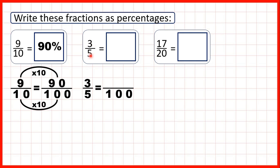Now we have three-fifths. Five times twenty is a hundred, because five times two is ten, so five times twenty must be one hundred. And again, what we do to the denominator, we need to do to the numerator as well. Three times twenty is sixty, so that's sixty percent.